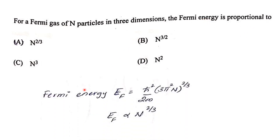The Fermi energy is given by EF = (ħ²/2m)(3π²n)^(2/3), so EF is directly proportional to n raised to the power 2/3. Therefore the Fermi energy is directly proportional to n^(2/3).